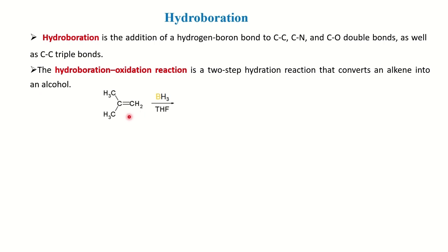Let's take the example where you have a terminal alkene and the reagent is BH3·THF. BH3 — boron has three hydrogens, and the octet of boron is incomplete, so it acts as a Lewis acceptor or Lewis acid. It is normally found in the form of BH3·THF or B2H6. When alkene is in the presence of BH3, the hydrogen of BH2 will add to the double bond, and boron also will add.